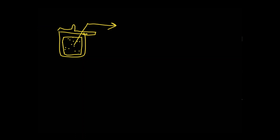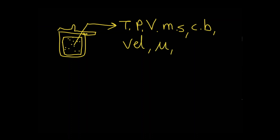Take another example: a pressure cooker. Inside the pressure cooker, the gas or air trapped inside is my system. For this system, I can list properties such as temperature, pressure, volume, molecular structure, chemical behavior, velocity of the gas, viscosity, density, toxicity, pH level — the list goes on and on. All these things could be properties which characterize the gas inside this pressure cooker.